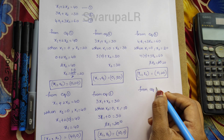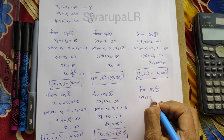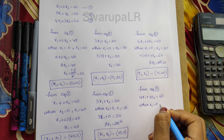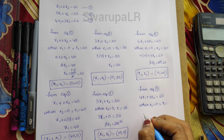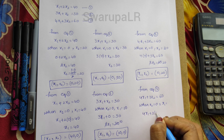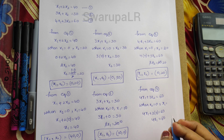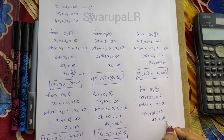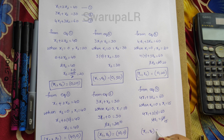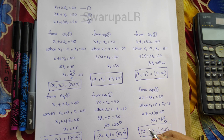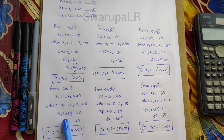From equation 3: 4x1 plus 3x2 equals 60. When x2 equals 0, we find x1: 4x1 plus 0 equals 60, so 4x1 equals 60, giving x1 equals 15. Therefore x1 comma x2 equals 15 comma 0. These are the 6 corner points we have to plot in the graph.